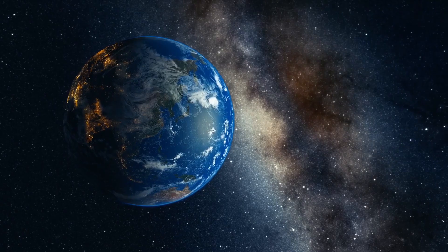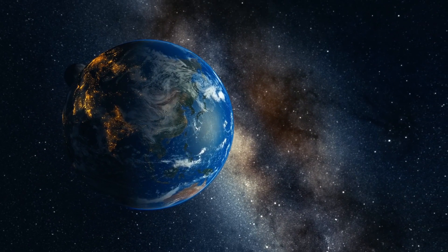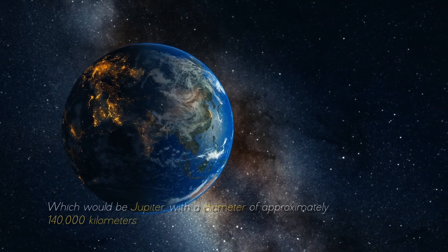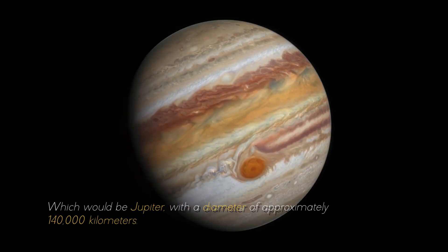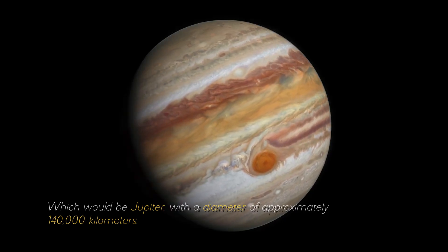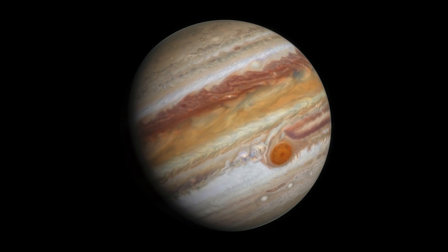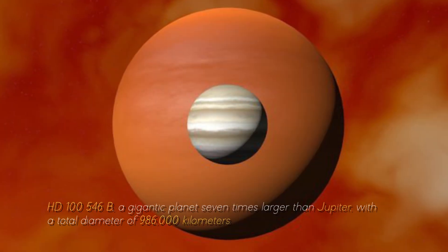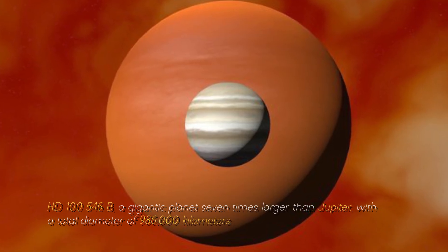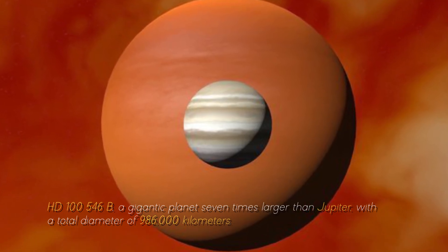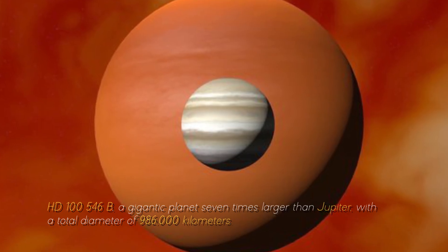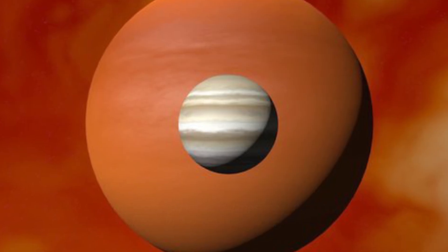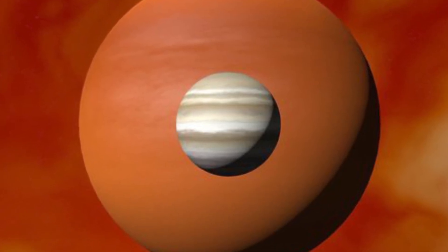If we compare it with the largest planet in our solar system, it would look like a ping-pong ball in front of a soccer ball, which would be Jupiter, with a diameter of approximately 400,000 kilometers. Now, let's compare Jupiter with the largest planet in the known universe, HD-10546b, a gigantic planet seven times larger than Jupiter, with a total diameter of 986,000 kilometers. You can imagine what Earth would look like near this cosmic monster.